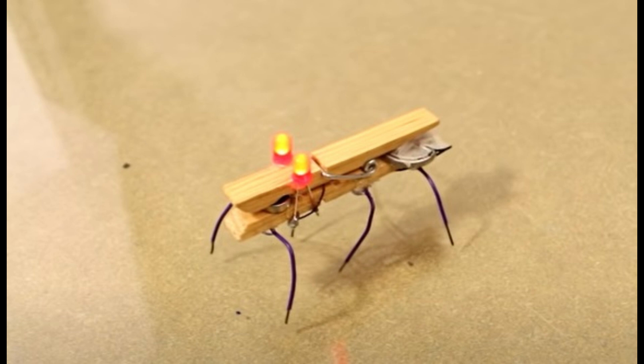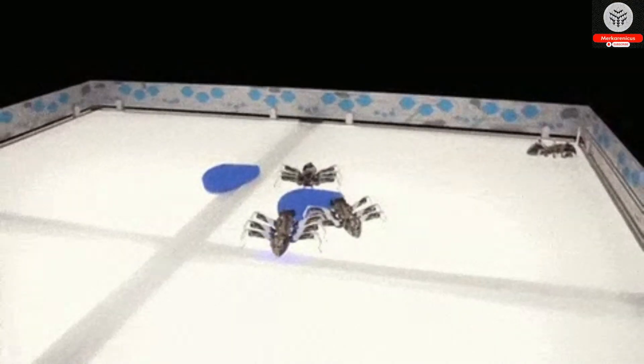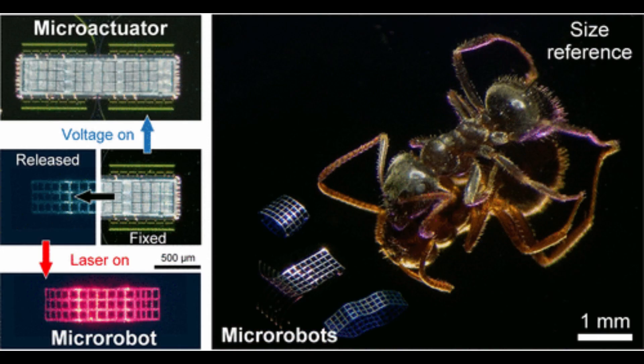Utilizing a substance known as a shape memory alloy, the actuator has the remarkable ability to alter its shape through the application of heat. This unique material is aptly named shape memory due to its capacity to retain and revert back to its original form.